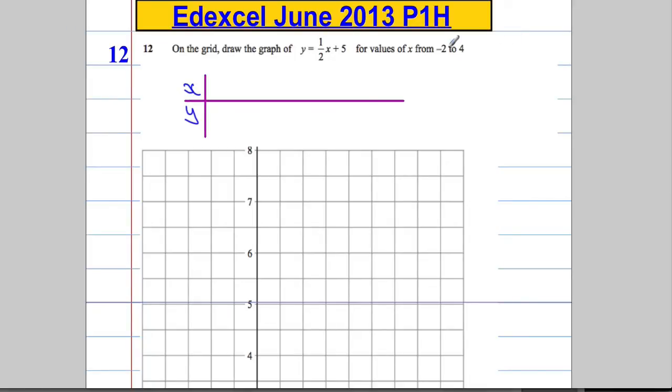So the different values of x we could have... I'll do a little table like this. The different values of x go from negative 2 up to 4, so it could be negative 2, negative 1, 0, 1, 2, 3, and 4.